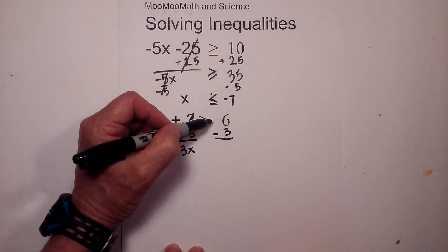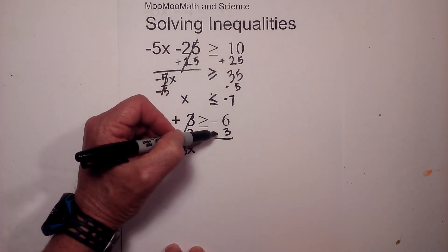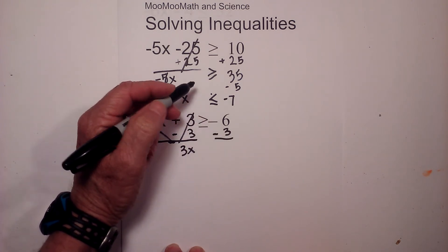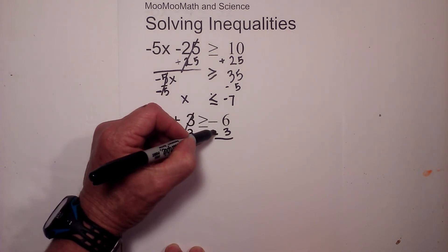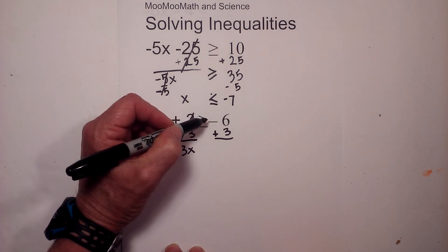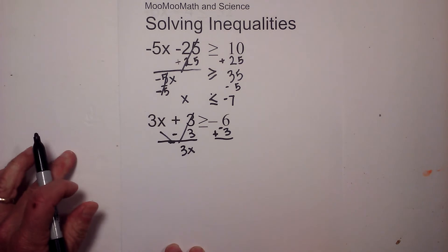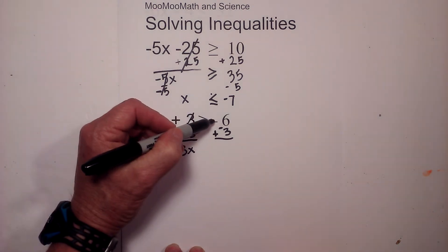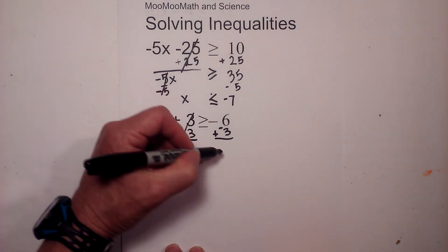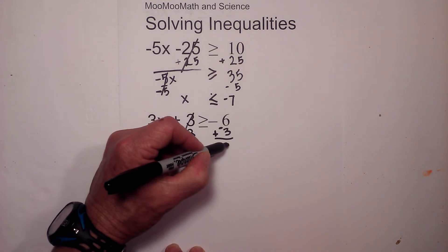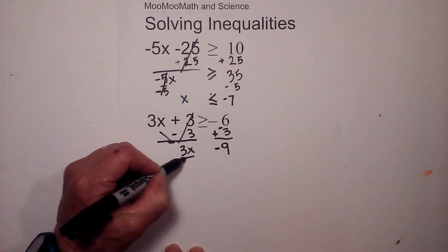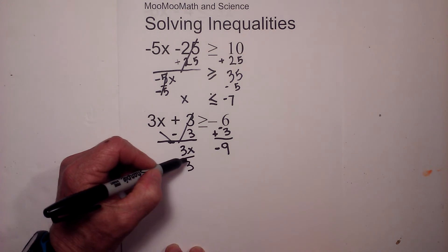Now with this we have negative 6 minus 3, so I like to change it to an addition. I'm going to change subtraction to addition, so that means I need to put the opposite sign on negative 3. So now I have negative 6 plus a negative 3, which is negative 9.